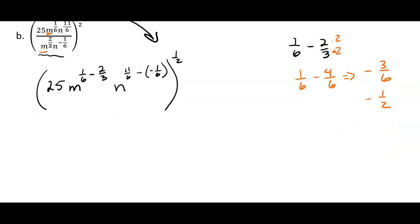So a little bit of fraction work there. Just kind of do it over on the side. And so I still have my 25. It's not doing anything yet. m to the negative 1 half. And then the 11 over 6 minus a negative 1 over 6. That's going to be 11 over 6 plus 1 over 6. And that's going to be 12 over 6. And that's going to be just a 2. So I'm going to have n squared. And then all of this is being raised to the 1 half. A lot going on in this problem.